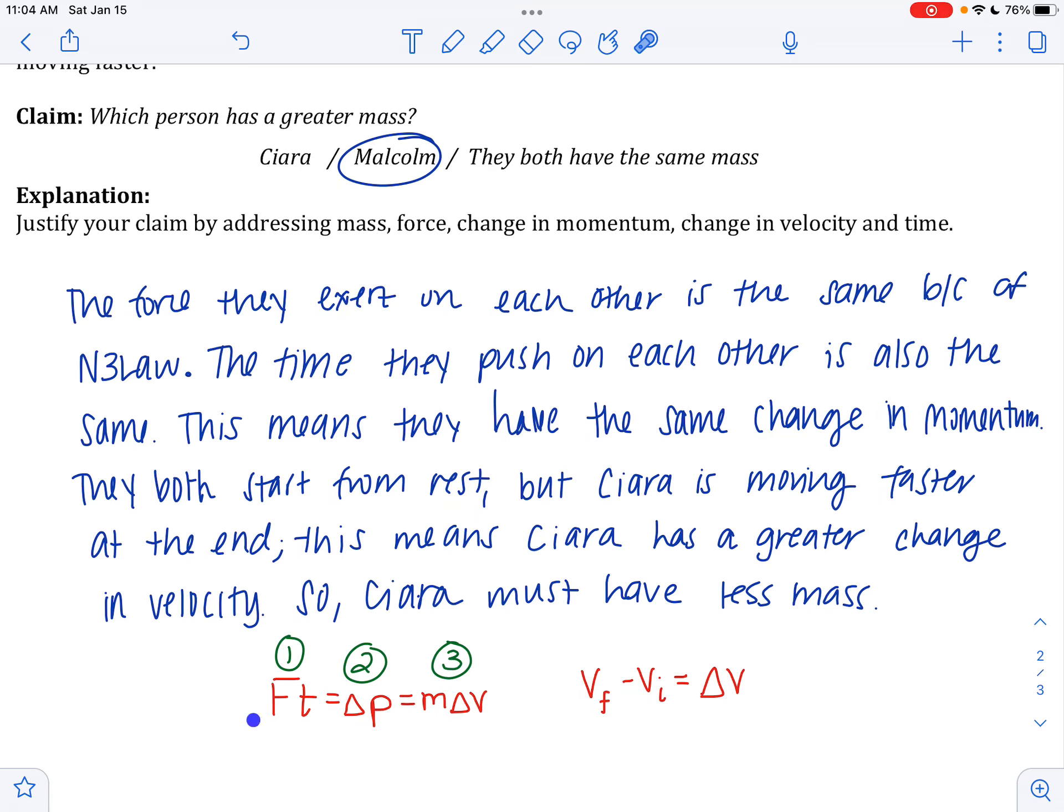So whenever we have a third law problem and we're saying that the sizes of the forces are the same, the time that those forces are exerted are also going to be the same. So that means they have the same force times time, so they have the same change in momentum. So there we're on step two, change in momentum. And then if they have the same change in momentum, we want to figure out how their mass is compared. So we're going to look at the change in velocity. And since they both started from rest, whoever has a larger change in velocity will be going faster at the end and vice versa. Alright, that is for formative number three.